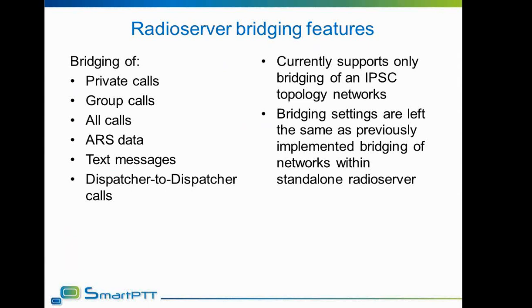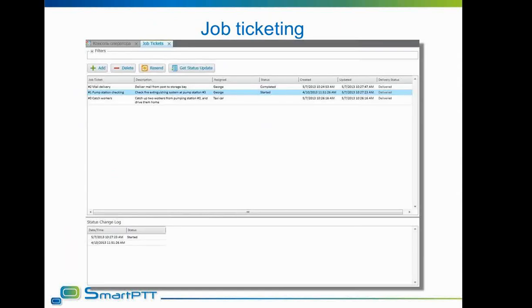The next feature to describe is job ticketing. Job ticketing support allows SmartPTT to fully implement the functionality added to MotoTurbo networks by Motorola. Using the new job tickets interface, you can create, assign, watch progress, and delete tickets. It is also possible to restart a repetitive task by selecting it and clicking the restart button, saving time by avoiding the need to recreate the ticket. Tickets give more fluent and visual control over the performance of tasks handled by subscribers of the radio network.